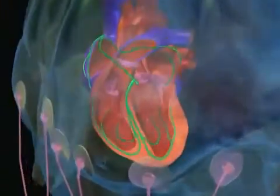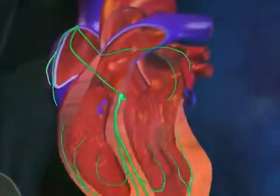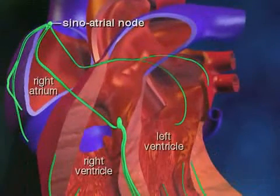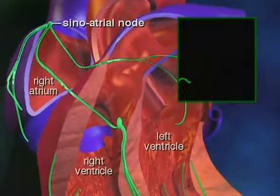In a normal heartbeat, the heart's signal follows a specific pathway through the heart. The signal begins in the sinoatrial node, or SA node, located in the right atrium.